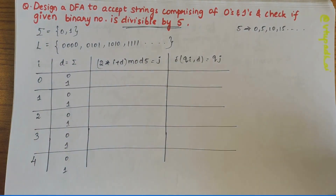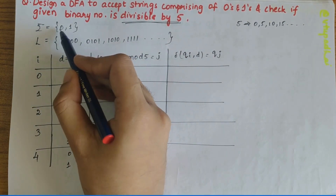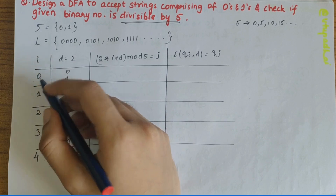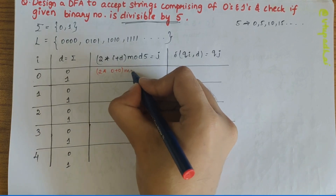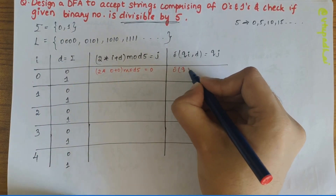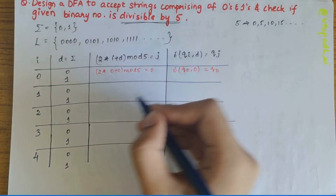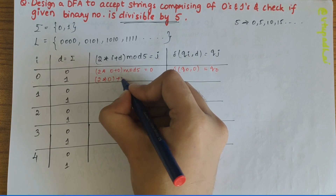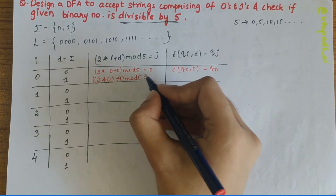We take I values as 0, 1, 2, 3, and 4, and D values can be only 0 or 1. When D=0 and I=0: J = (2×0 + 0) mod 5 = 0, so δ(q0, 0) = q0. When D=1 and I=0: J = (2×0 + 1) mod 5 = 1, so δ(q0, 1) = q1.